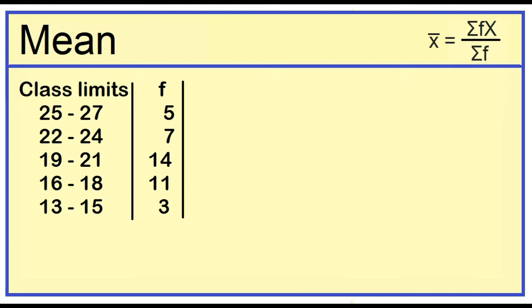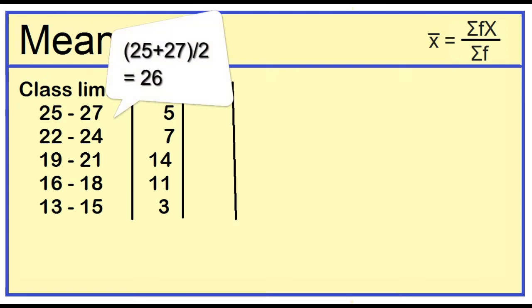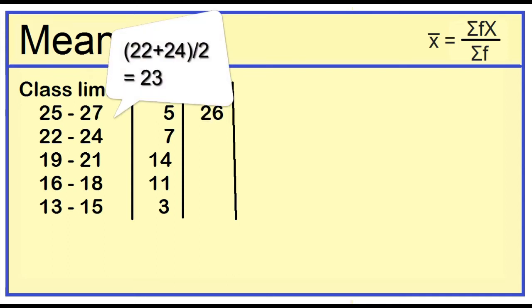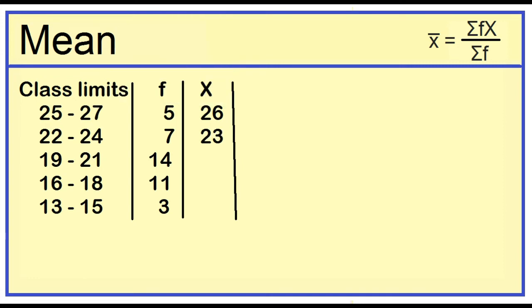Let's add a column for the class marks. To find the class mark, add the lower limit and the upper limit, then divide the result by 2. For example, 25 plus 27 is 52, divided by 2 is 26. Then 22 plus 24 is 46, divided by 2 is 23. The remaining class marks are 20, 17, and 14.